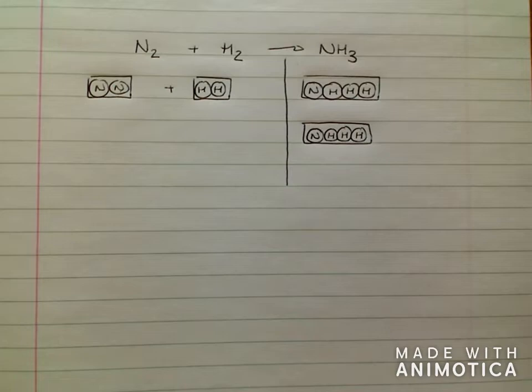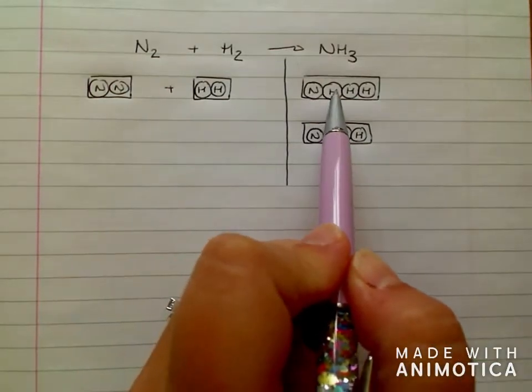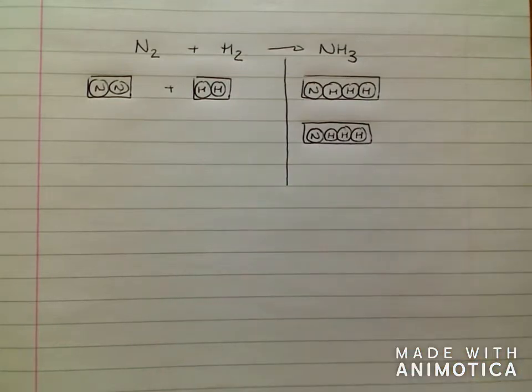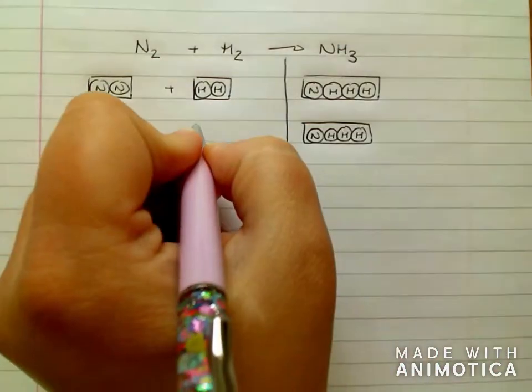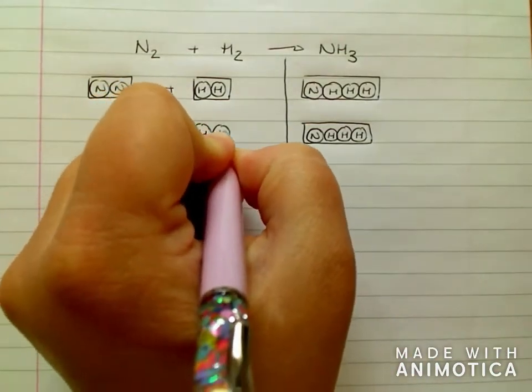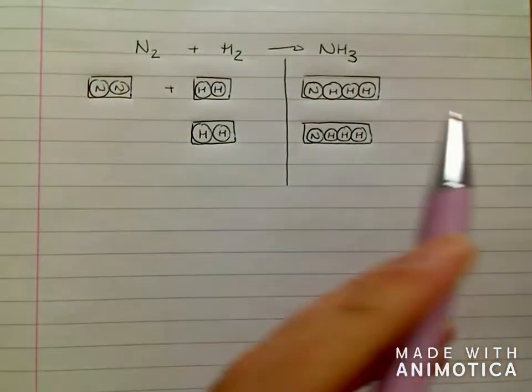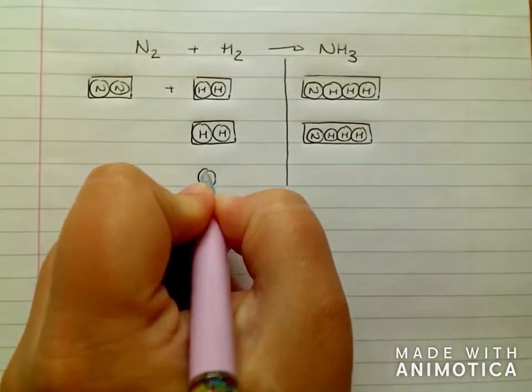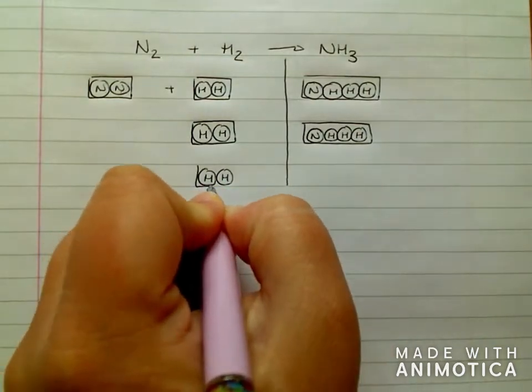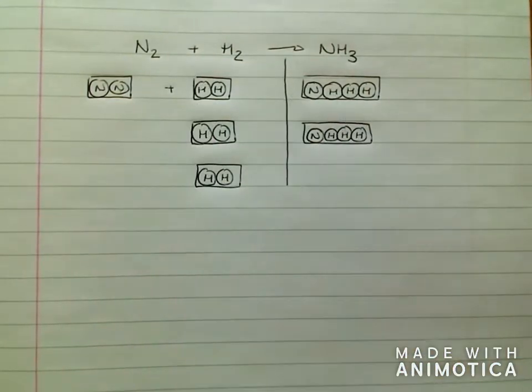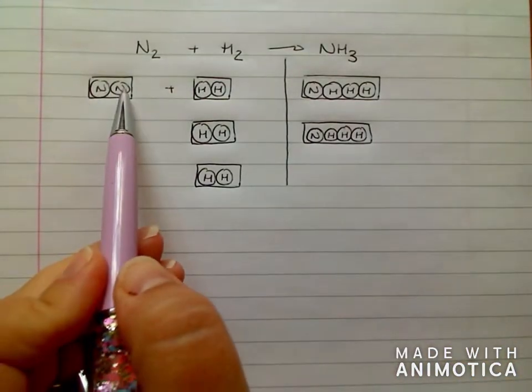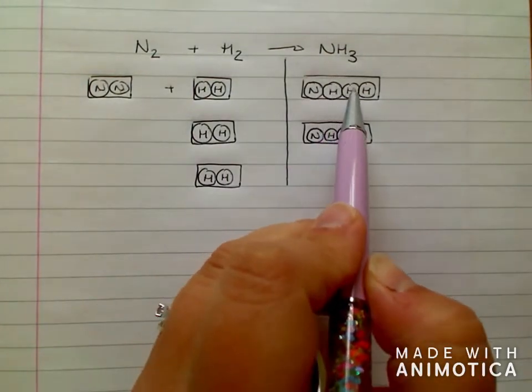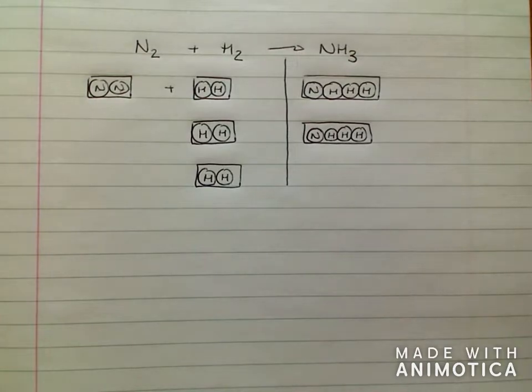But my hydrogen is still not done. I've only got two here, and I've now got six on this side. Well, let's add another one. HH. Well, I've now gone from two to four, but I need six. So, I'm going to need to add one more box of hydrogen. And that now gives me six on each side. So, I've got two nitrogen, two. Six hydrogen. And six.